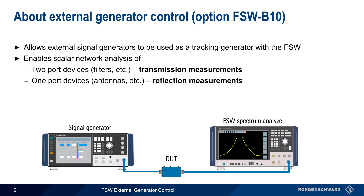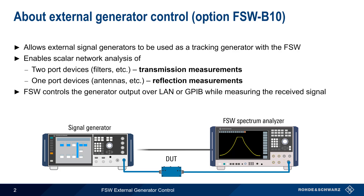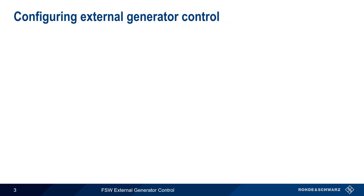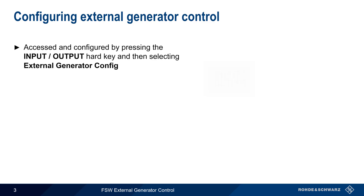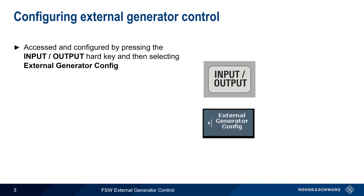For both measurement types, the FSW controls the output power and frequency of the signal generator over either a LAN or GPIB connection. External Generator Control is accessed by pressing the Input/Output hard key on the front of the FSW, and then selecting External Generator Config.